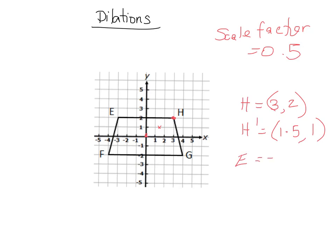So E is at negative 3 comma 2, which means that our new image will be at negative 1.5 comma 1. Just halving those coordinates there. So negative 1.5 comma 1 is right here.